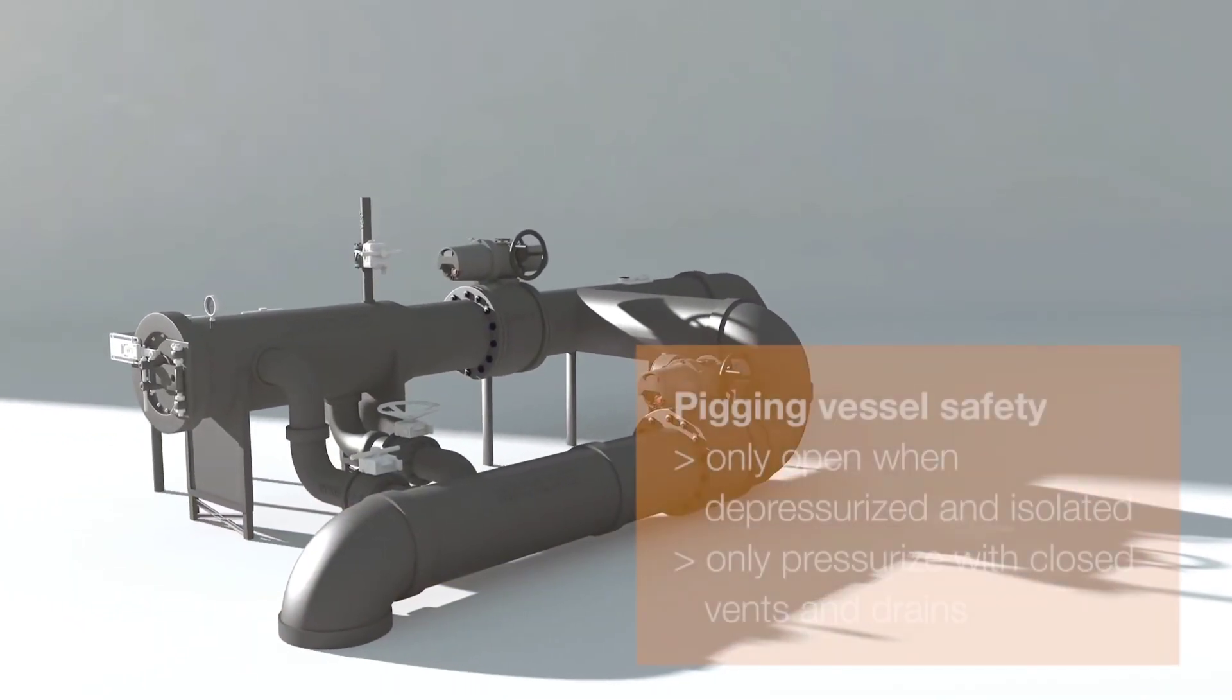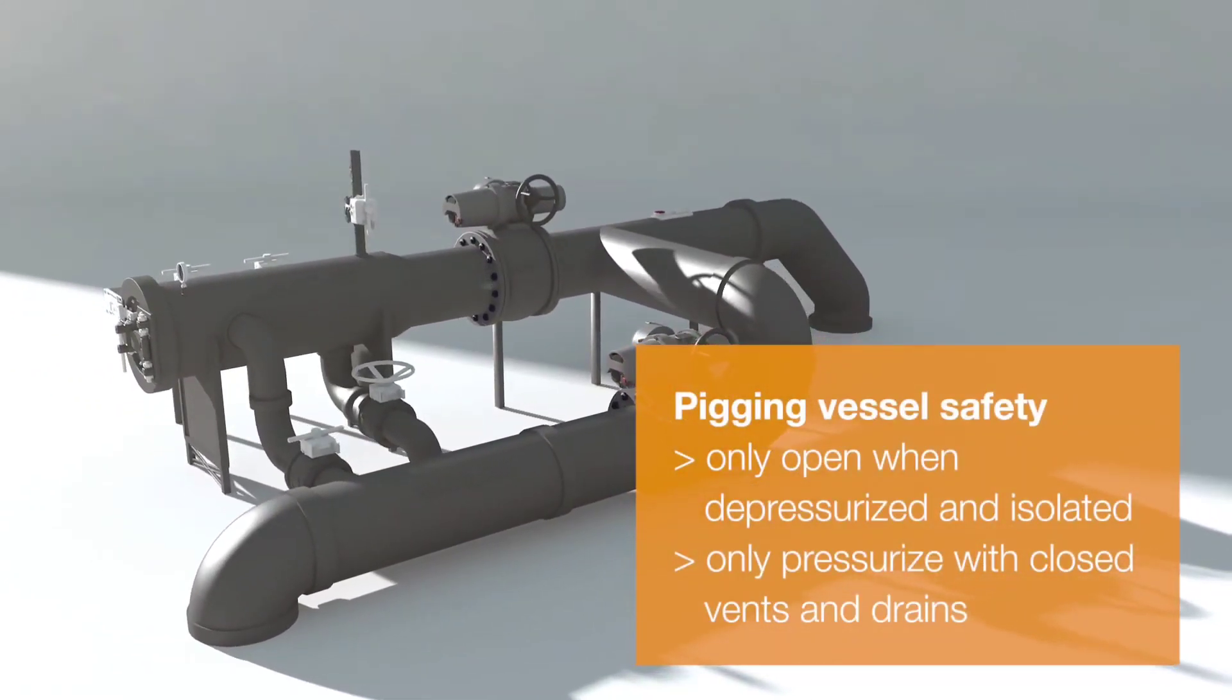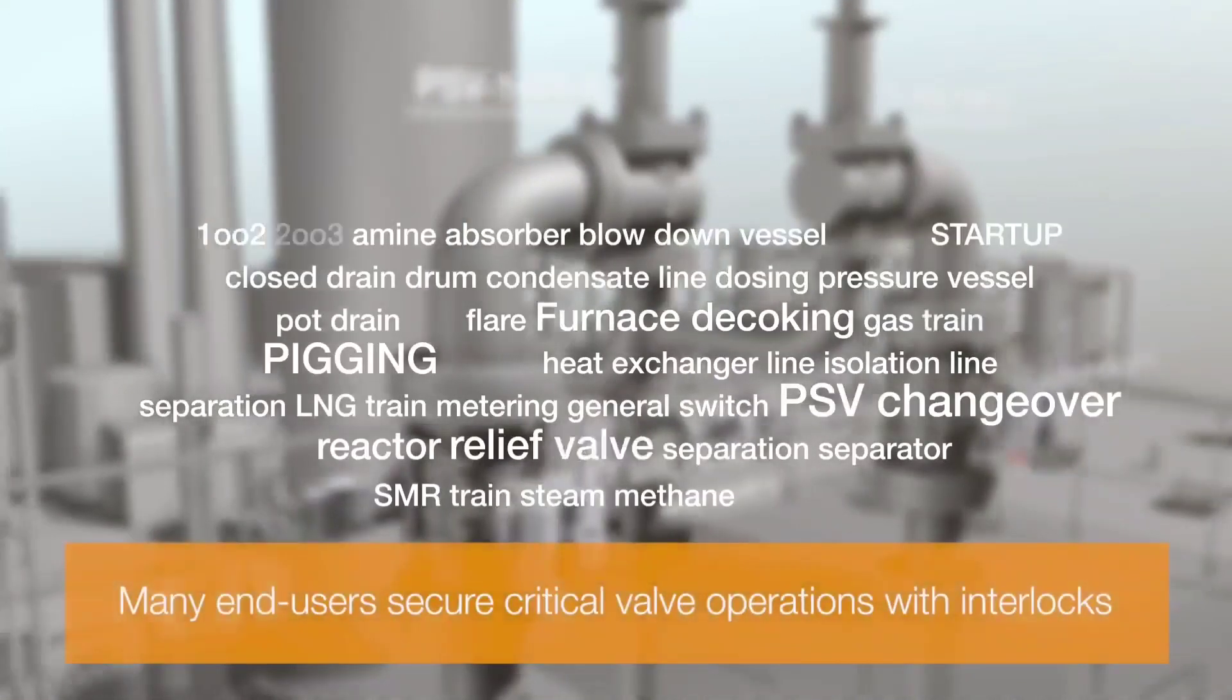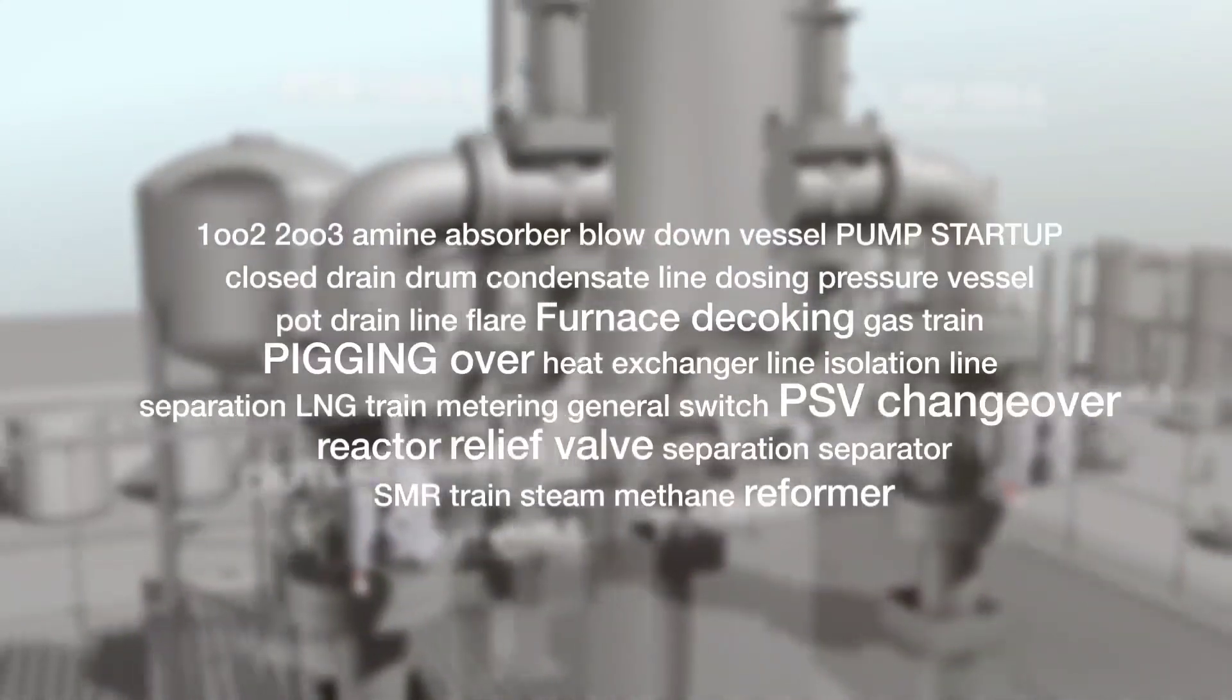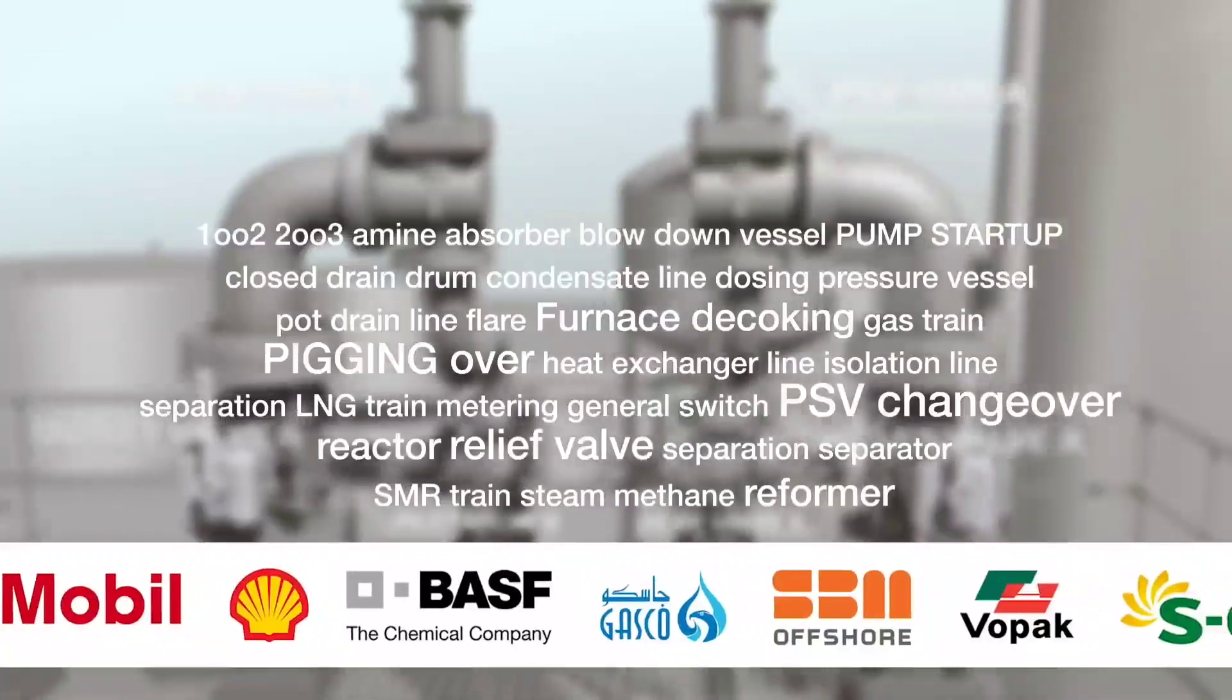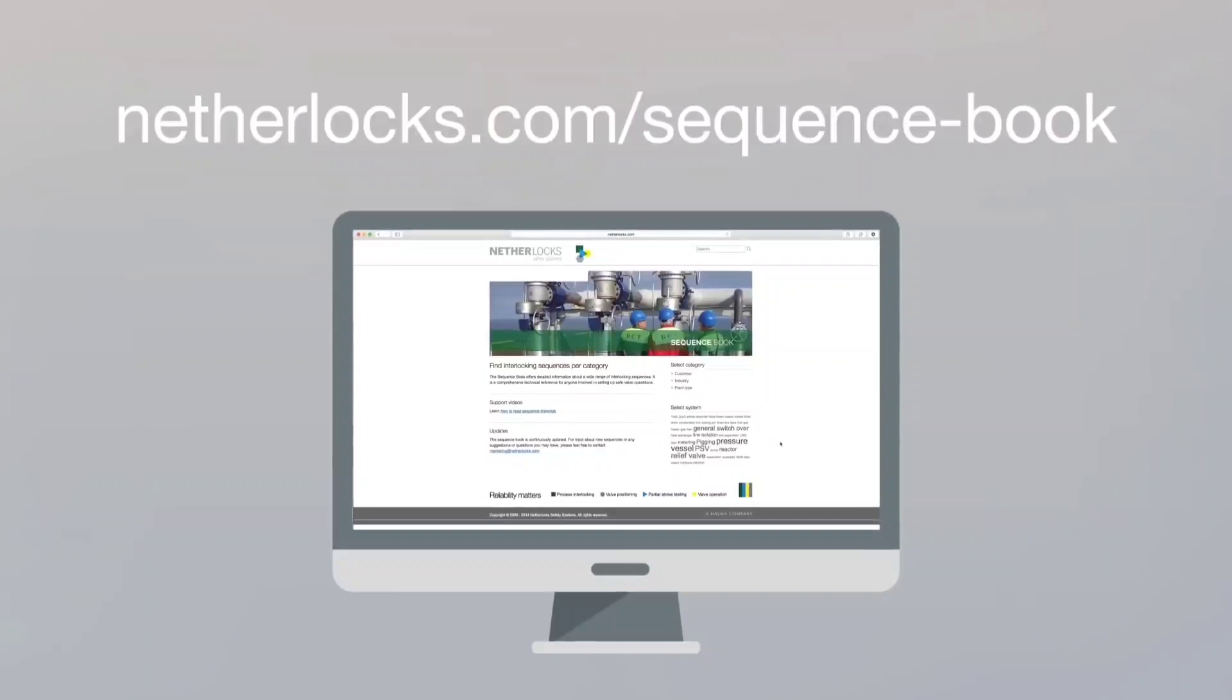Interlocks are used to secure many valve operations, like pipeline picking. Abnormal operations are the root cause for many accidents. Many end users already identified numerous critical applications and improved process safety with the use of interlocks. An overview of these applications is found in the Netherlocks online sequence book.